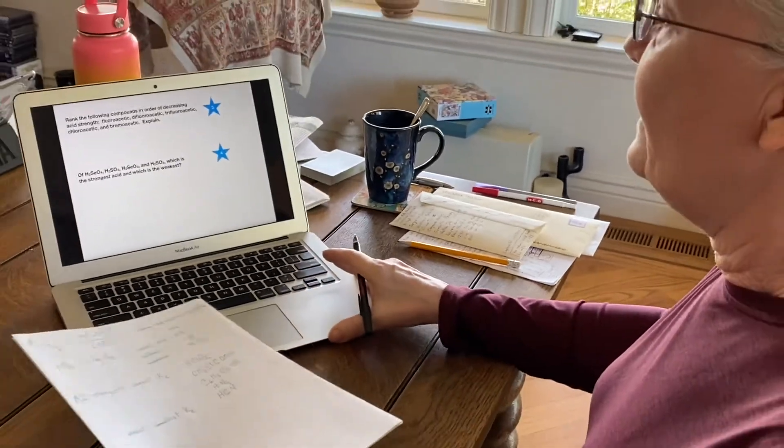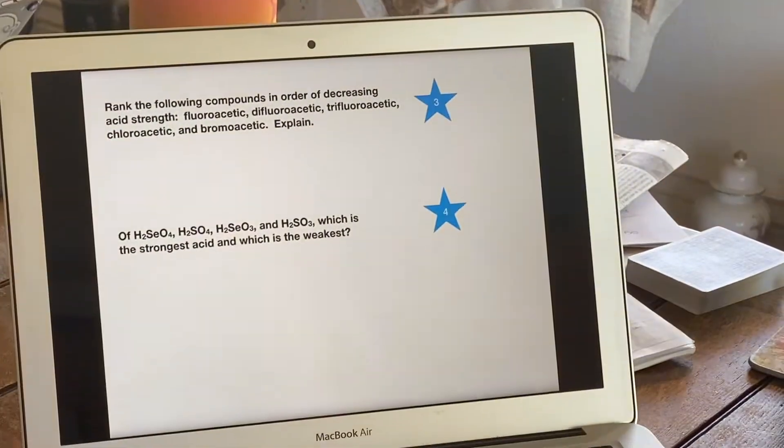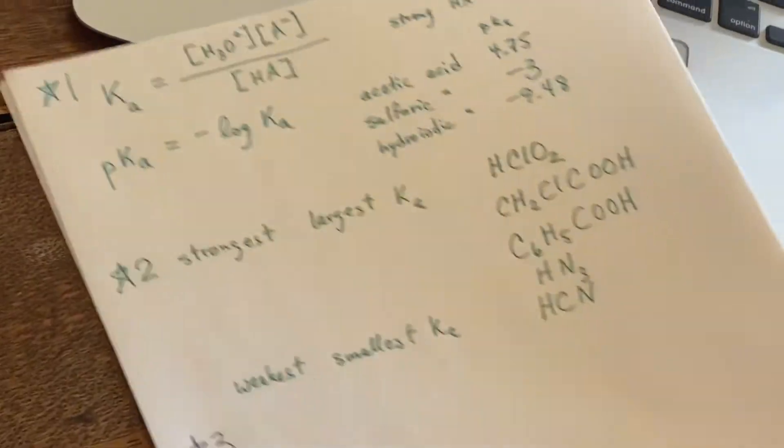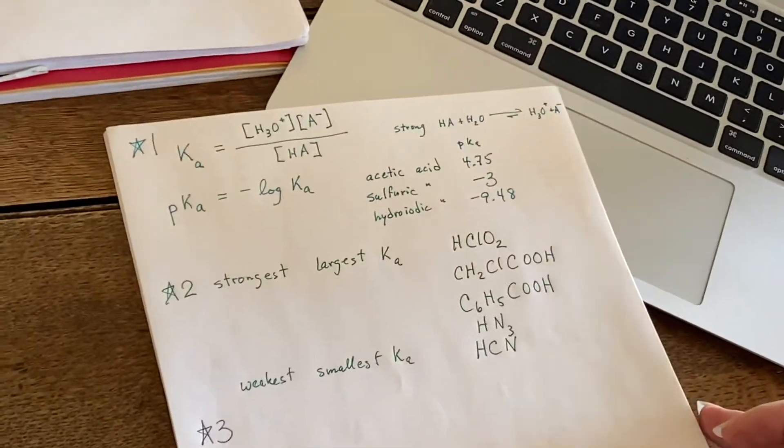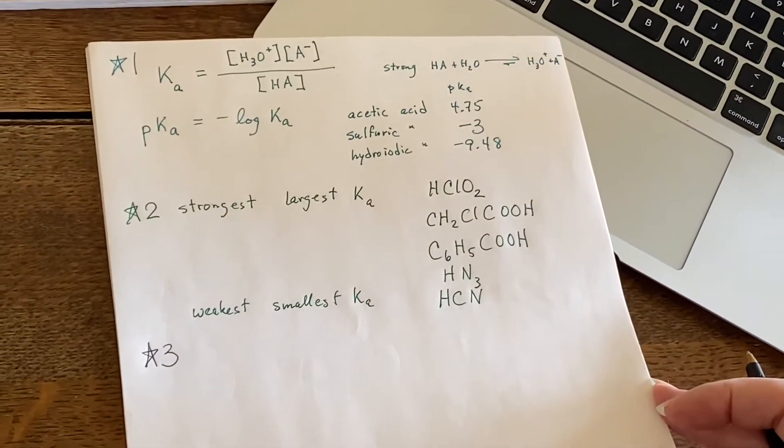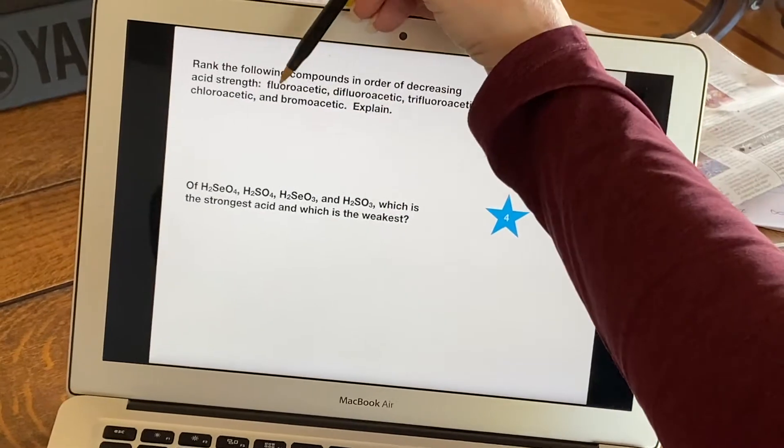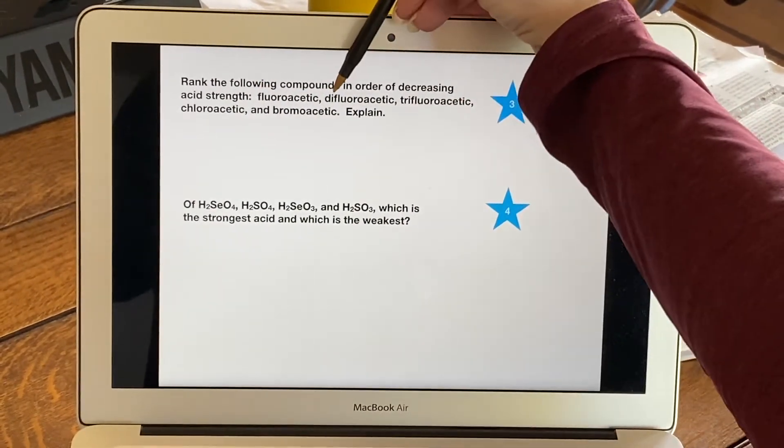Rank in order of decreasing acid strength. So here is our star three, and we're saying decreasing acid strength. All right, so what do we know? We've got five things to worry about. We have three of them that are fluoro: one is a single, one's a double, and one's a triple.